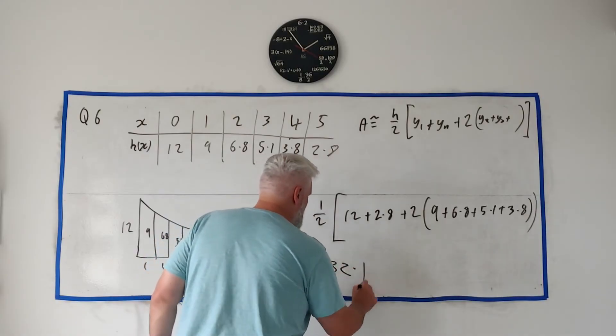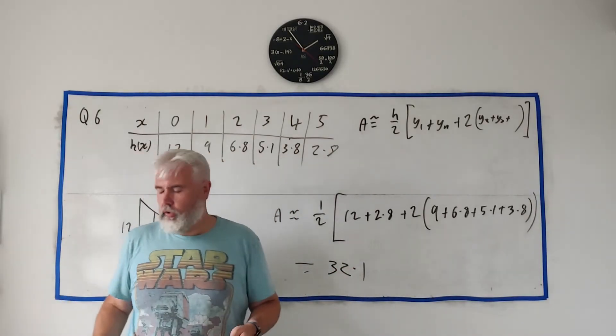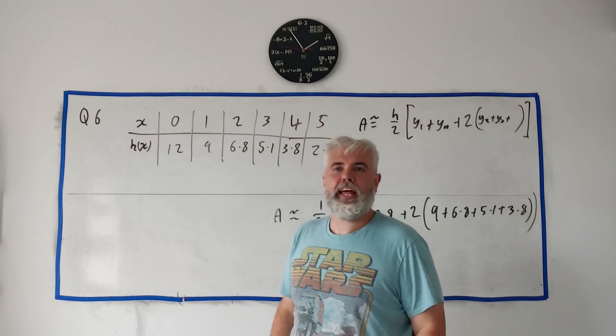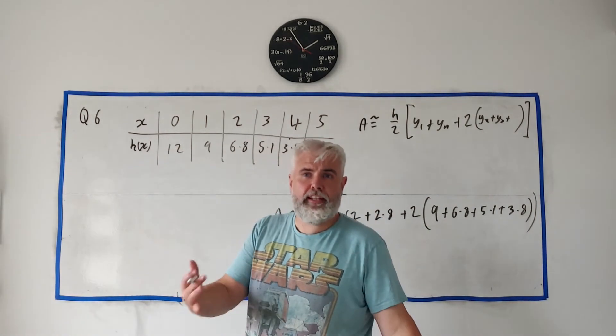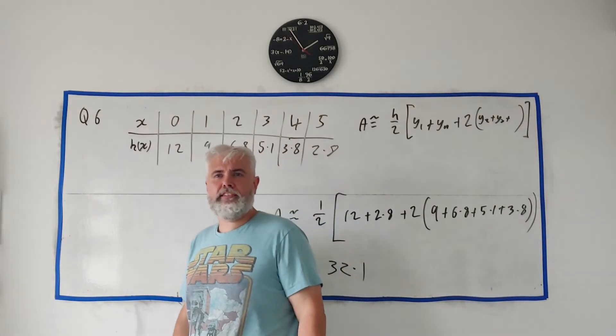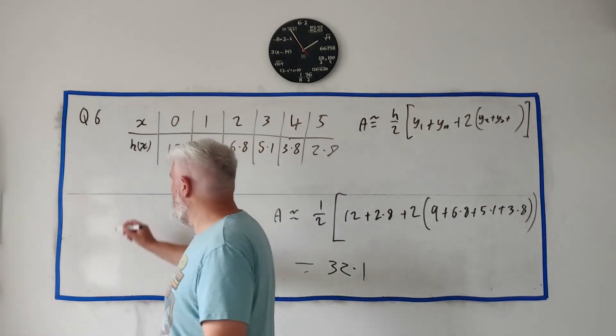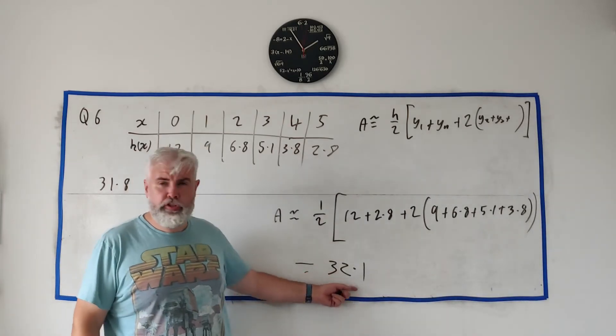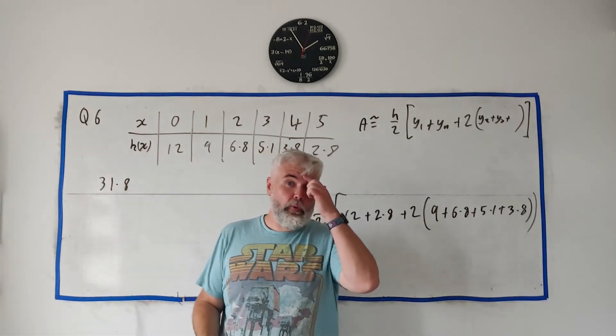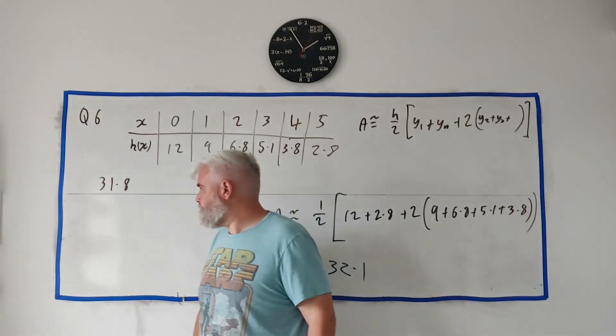Now for the last part, they tell us this isn't correct, this answer we got, the Liam got. They tell us the correct answer, I'm just looking for it here, is 31.8. So it's close, 32.1. They want us to find out what the percentage error is.